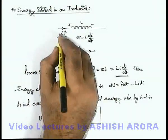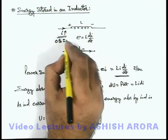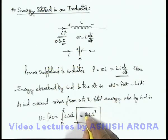If current changes from zero to i, then when current i flows in an inductor, the total energy stored is ½Li². This energy was absorbed when the current was raised from zero to this value.